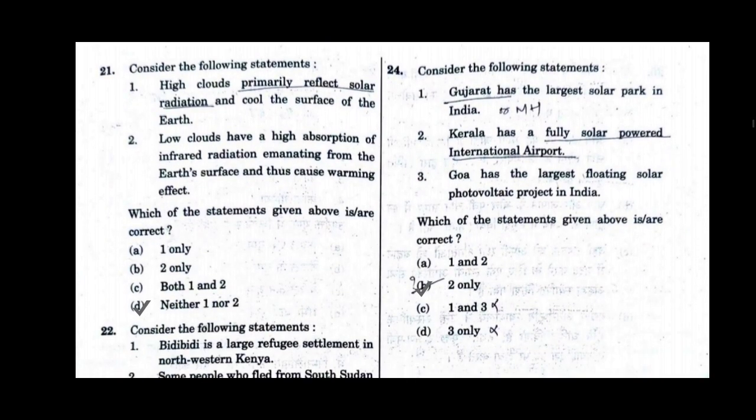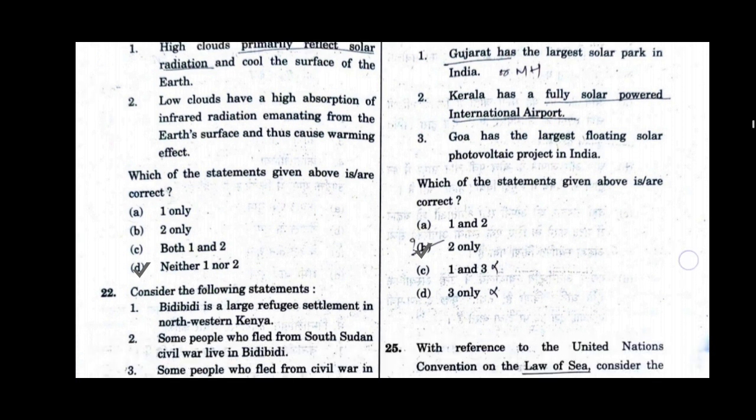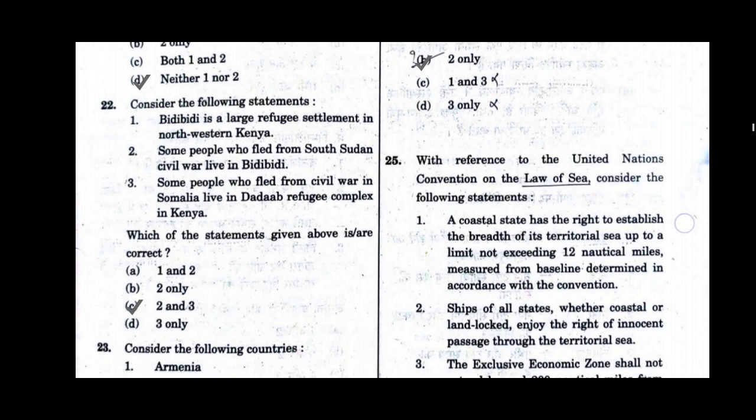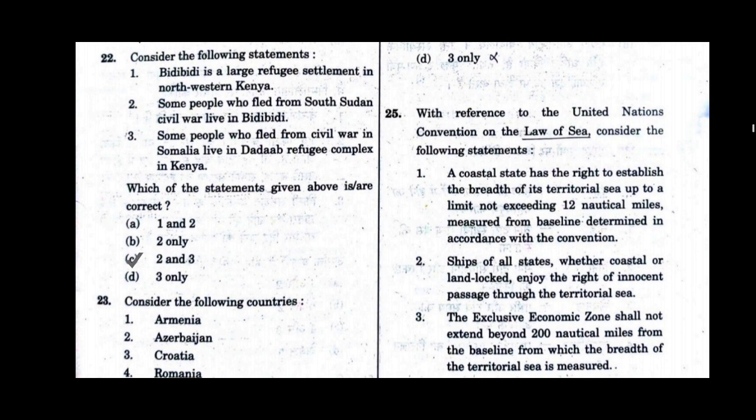Question number 21. Consider the following statements. Which of the statements given above is correct? Option D will be the correct answer for question number 21: neither one nor two. Question number 22. Consider the following statements. Which of the statements given above is correct? Option C will be the correct answer: statements 2 and 3 are the correct statements.